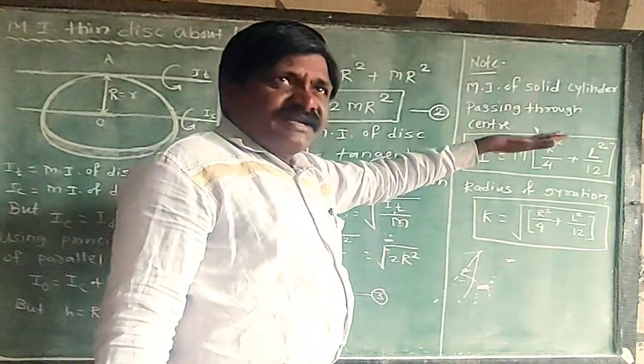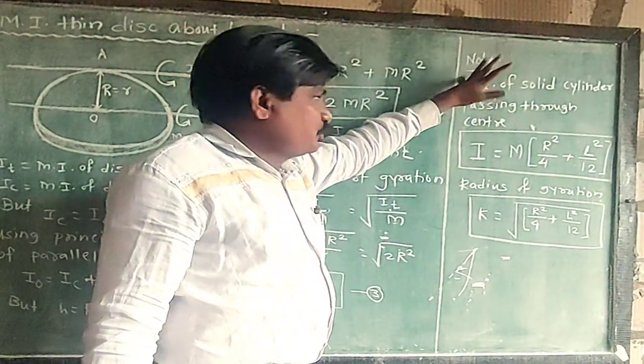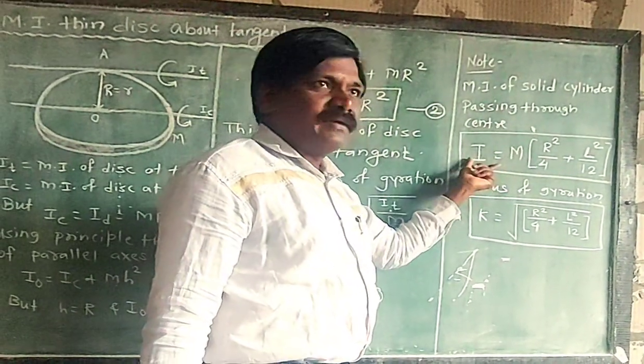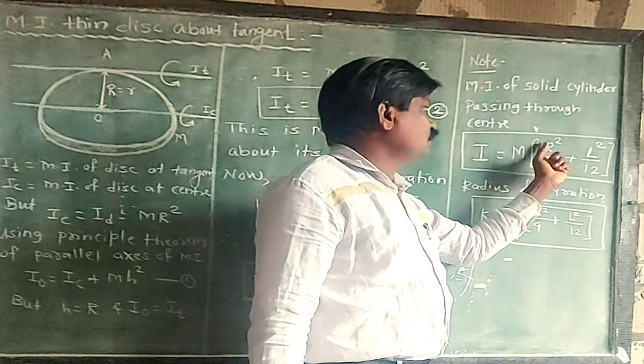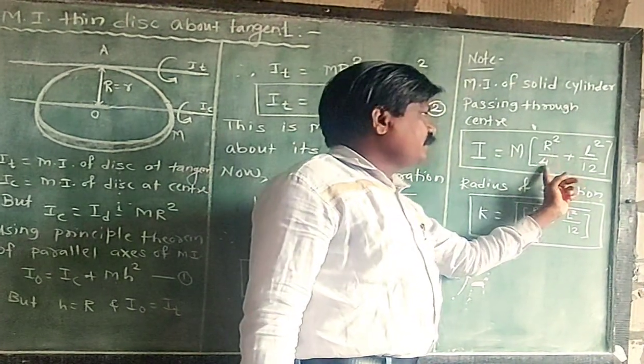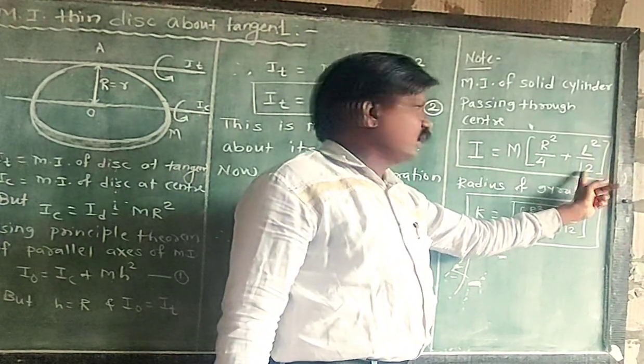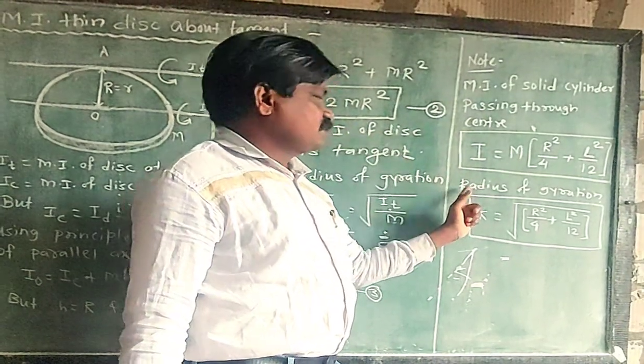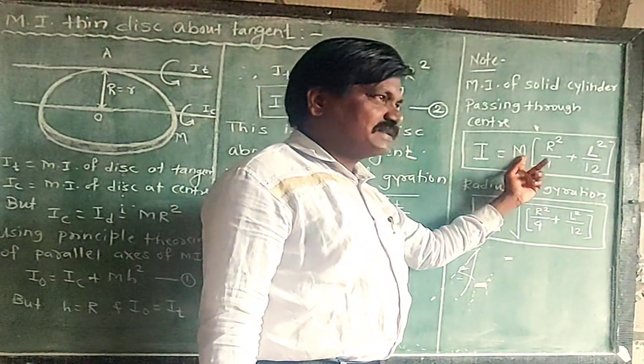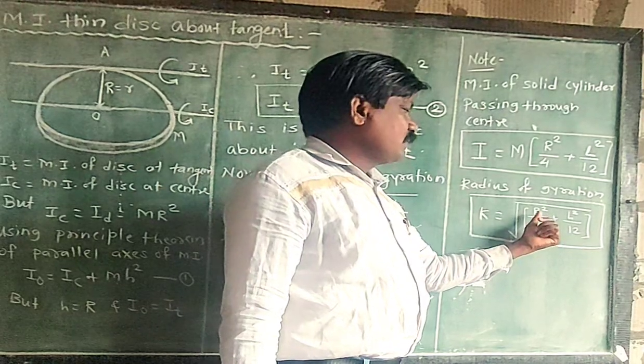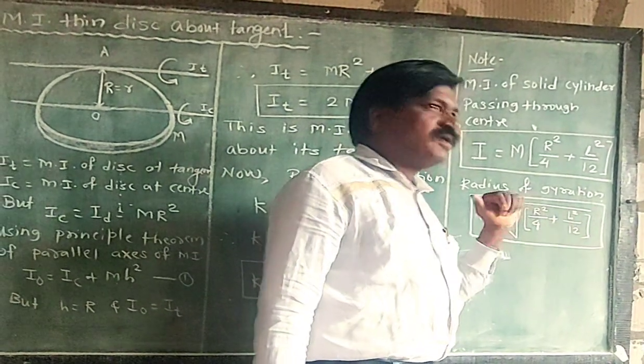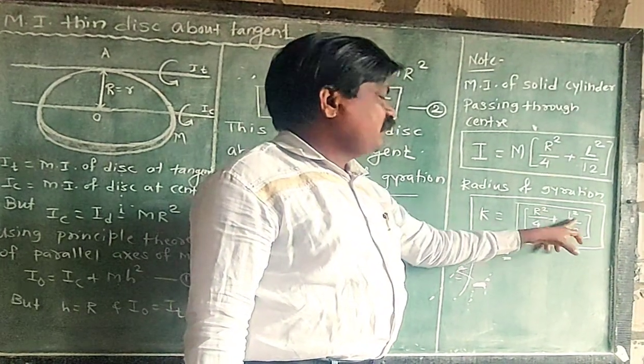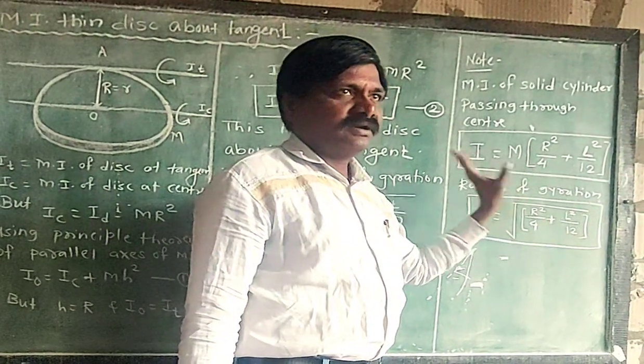Here this is the derivation. You need to note the important point that in the question they might ask for a solid cylinder passing through its center. Solid cylinder's formula is what? I is equal to M into under root of R square divided by 4 plus L square upon 12. Here the momentum of inertia is for a solid cylinder passing through its center. The radius of gyration is what? M cancels. What remains? Under root of R square upon 4 plus L square upon 2. Here R means the radius of solid cylinder. Here a solid cylinder.